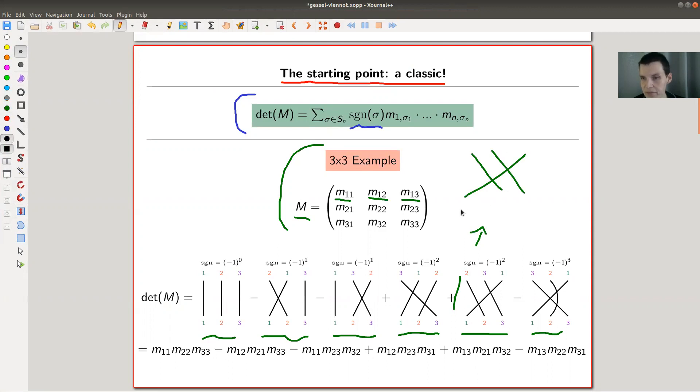And the way I want to read it is I have three numbers at the bottom, the permutation of three numbers. And now I just follow the strings and put them on the top. So this sends one to position three. So I write down M13. And this sends two to one. M21. And it sends three to two. M32. So this element here. And you just do the same for all permutations and take the sum.